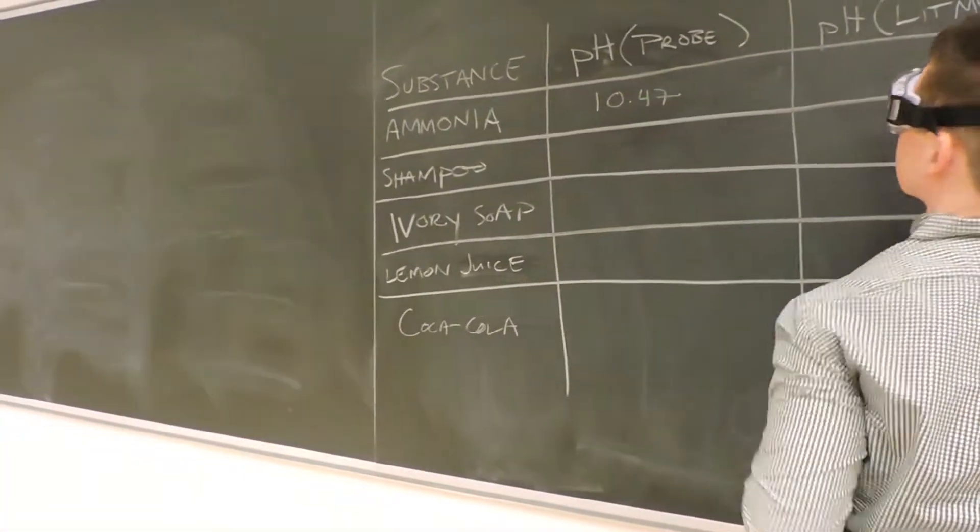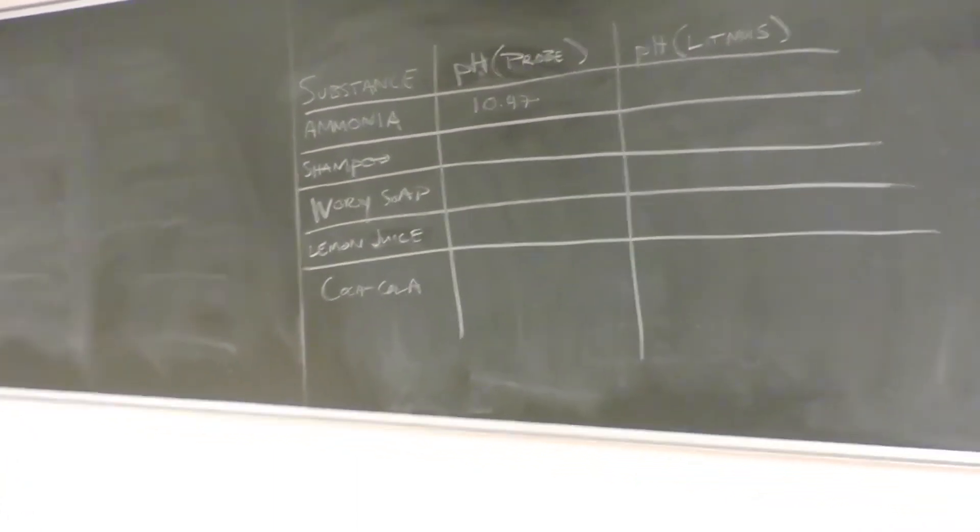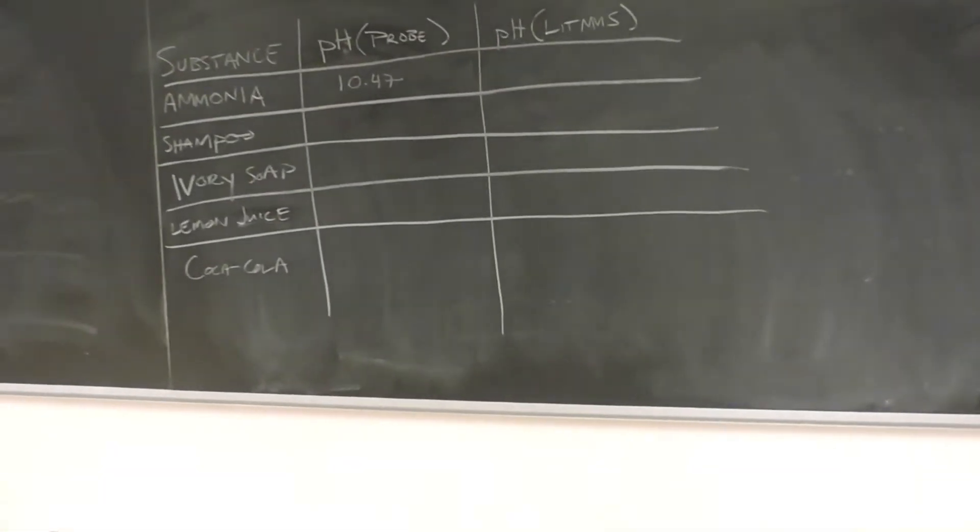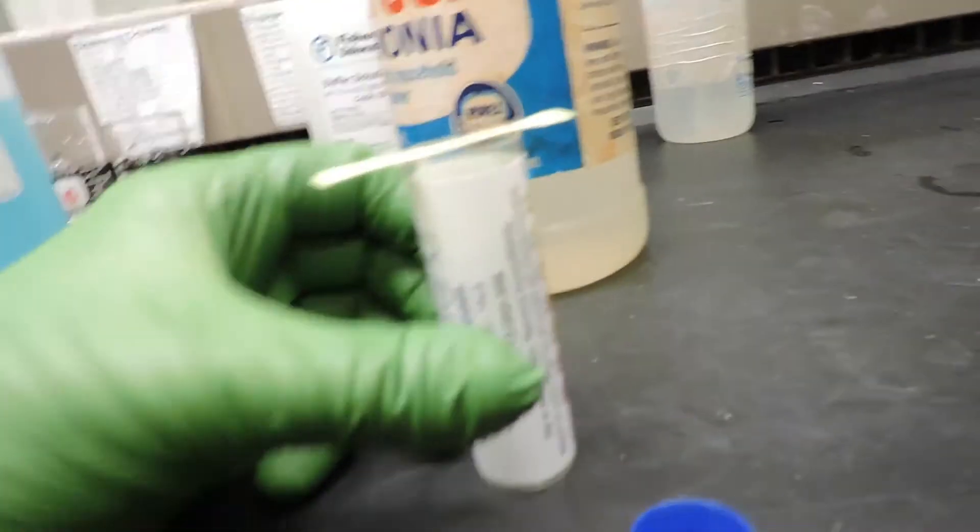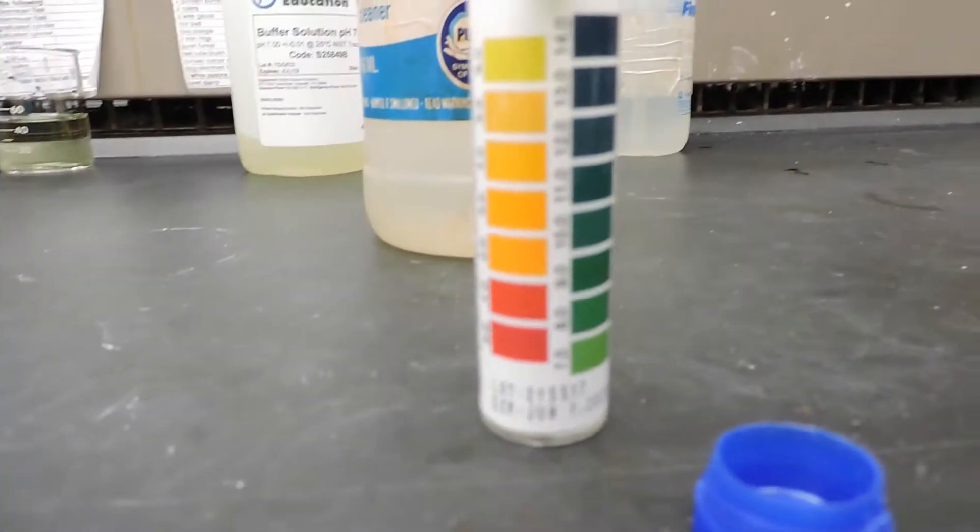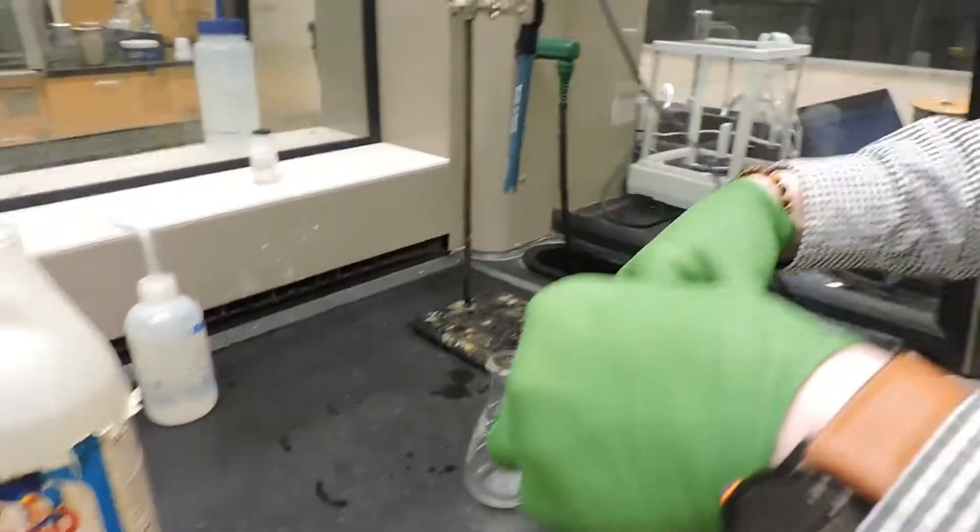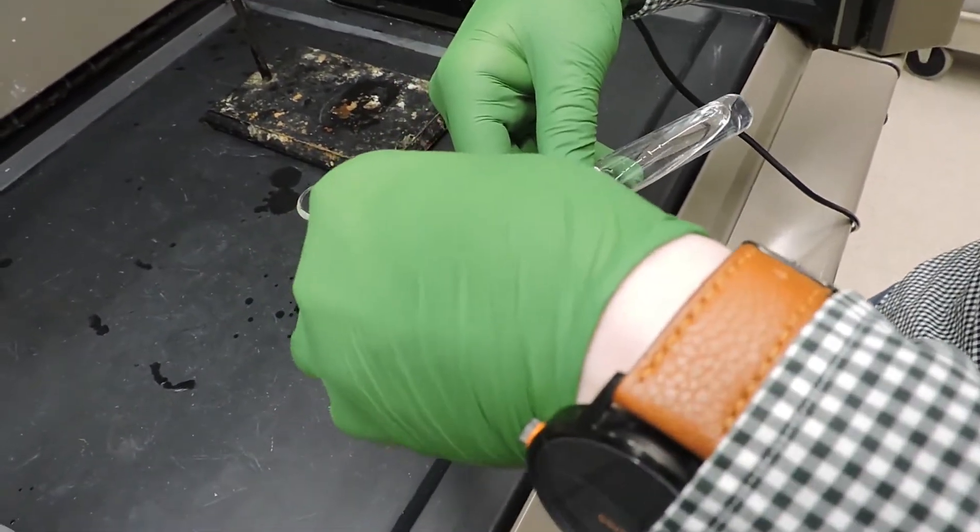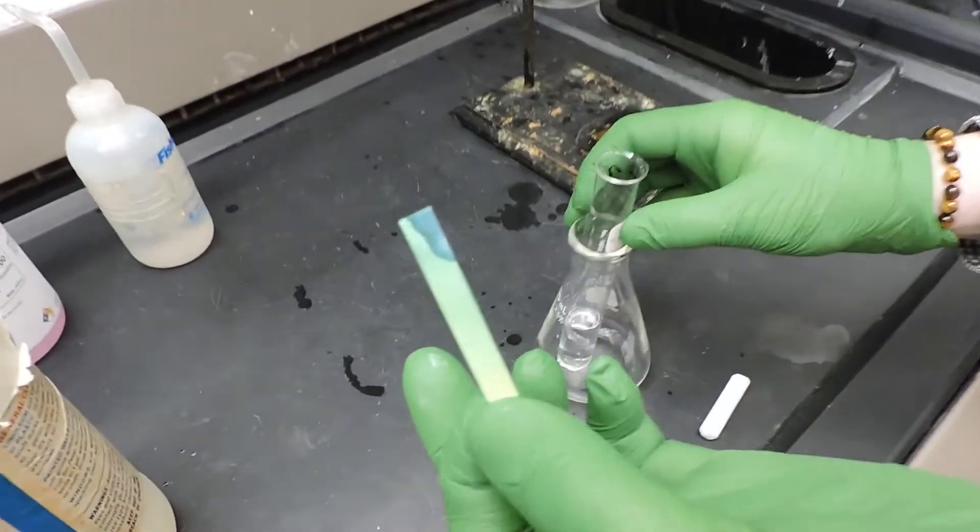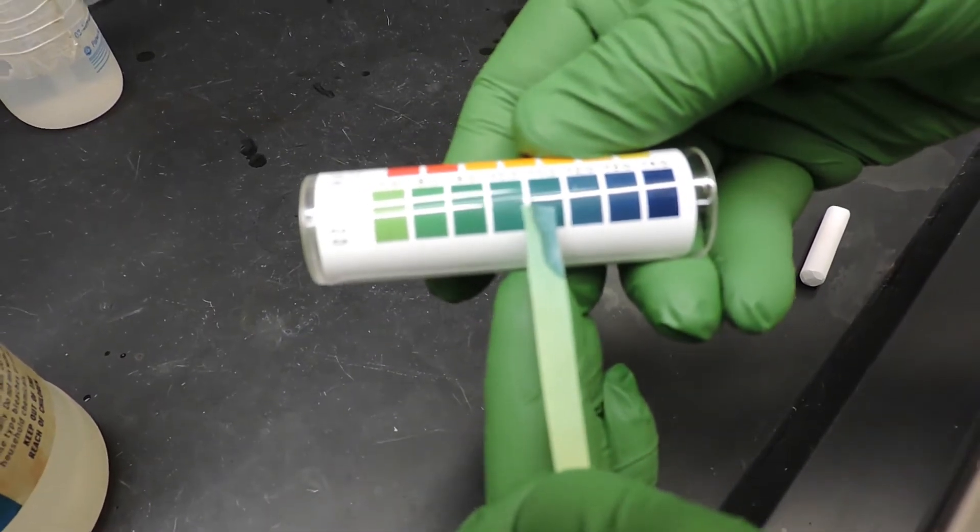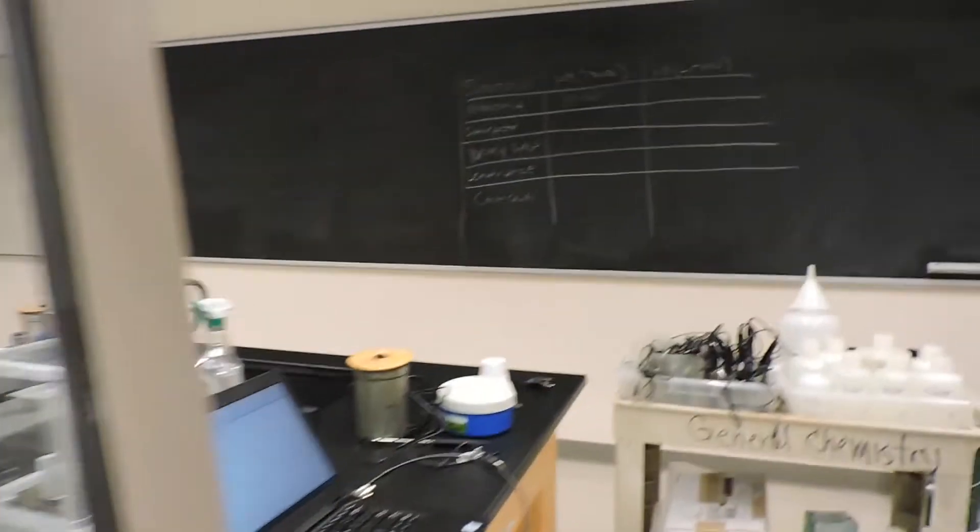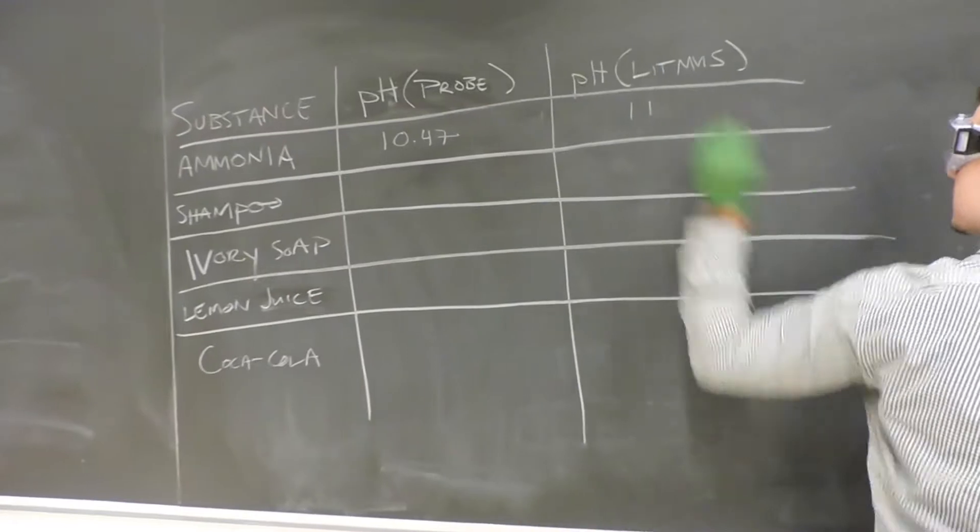So Jared will write that in here. Then we're also going to use some litmus paper to see what the pH is according to that paper, and see if the probe and paper both match. So here's our litmus paper. There's a scale on the container based on what color it changes that's going to tell us what the pH is. He's going to dip it in the solution, and the color is going to tell us the approximate number of the pH. It's like a blue-ish, and we're at 11, about 11. That was pretty close. We got 10.47 with the probe, and we're going to say about 11 with the litmus paper.